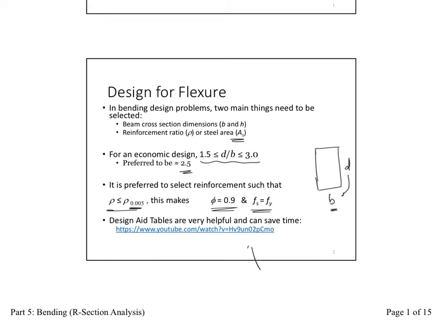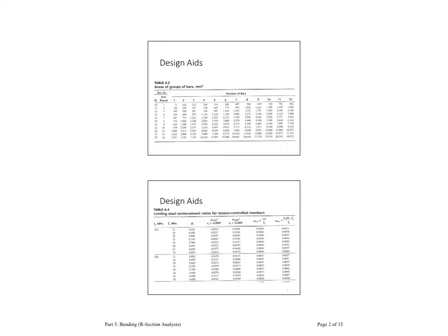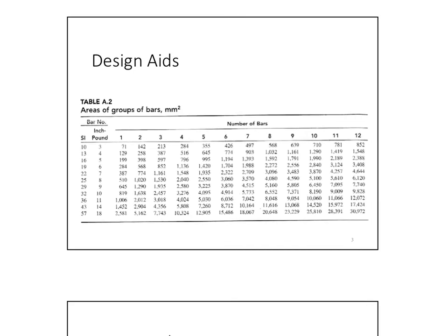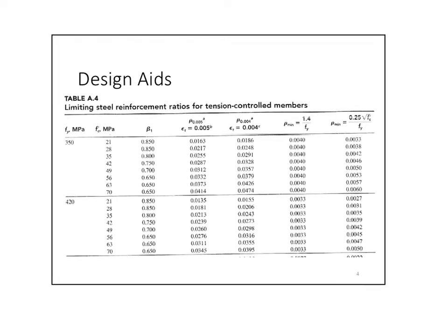And this is the link to the video that explains how to use the tables. We're going to go over the tables very quickly. Obviously, this is the table A2 that talks about the bar sizes. So if I have, I don't know, 4 phi 16, four number, that's the number of the bars, phi 16. I go here, I go here, I pick up this number. So I know the number right away. That saves a lot of time.